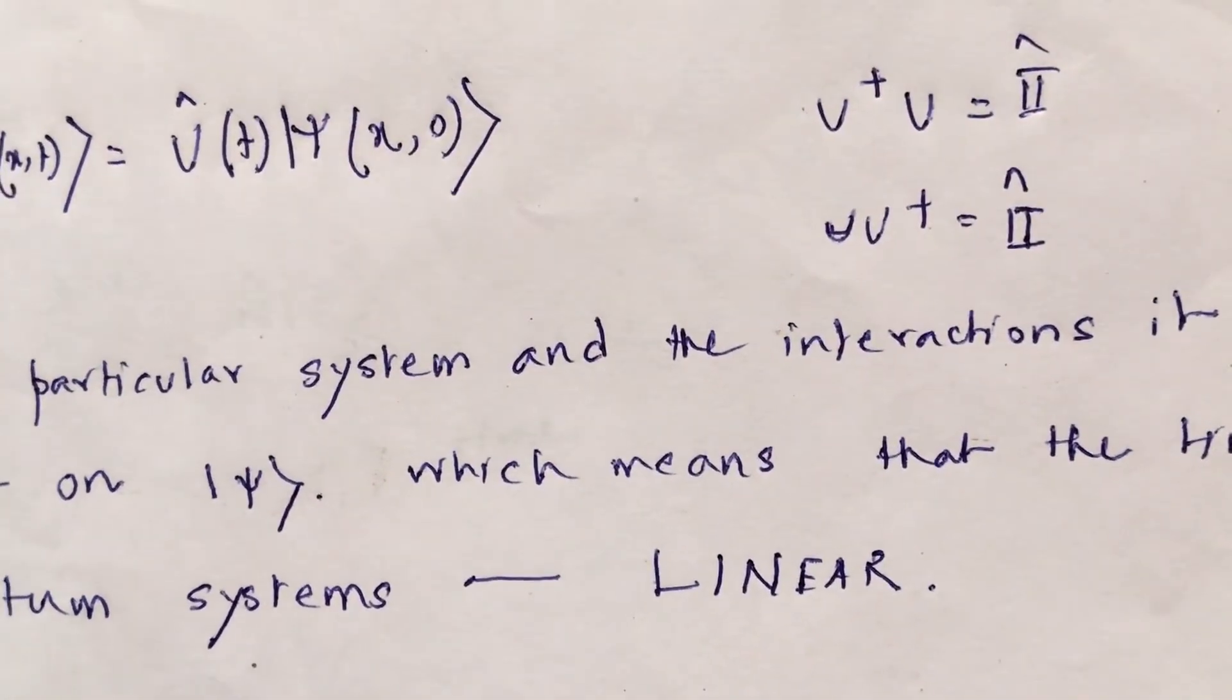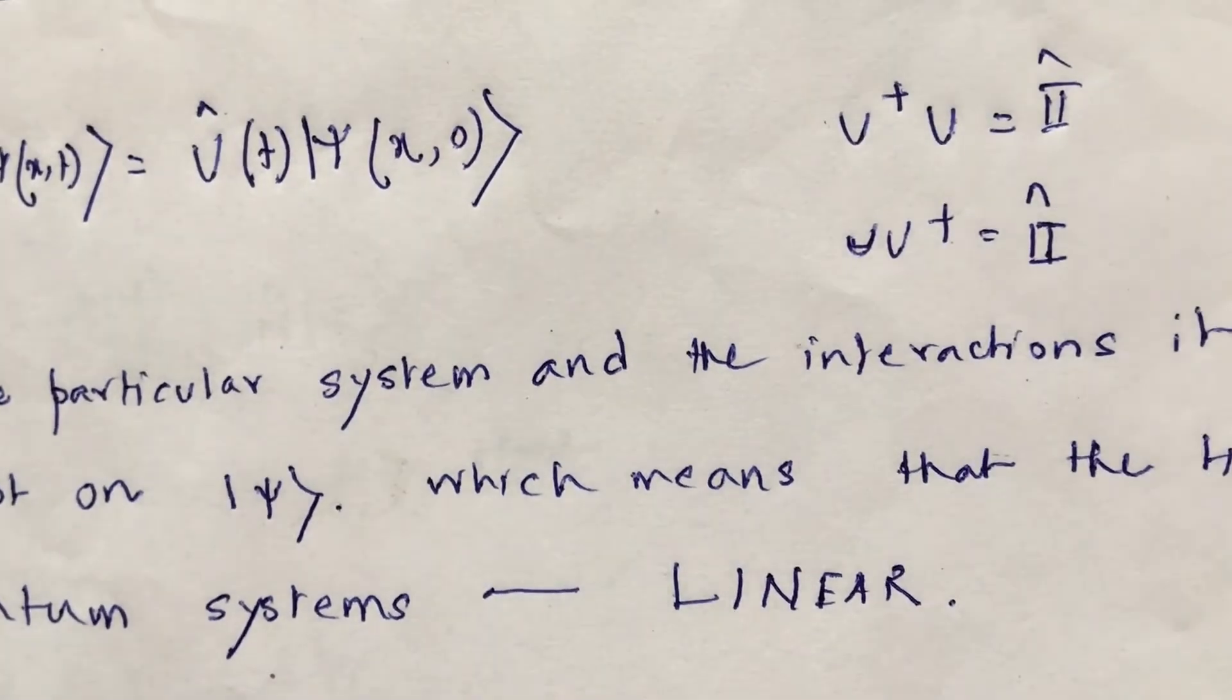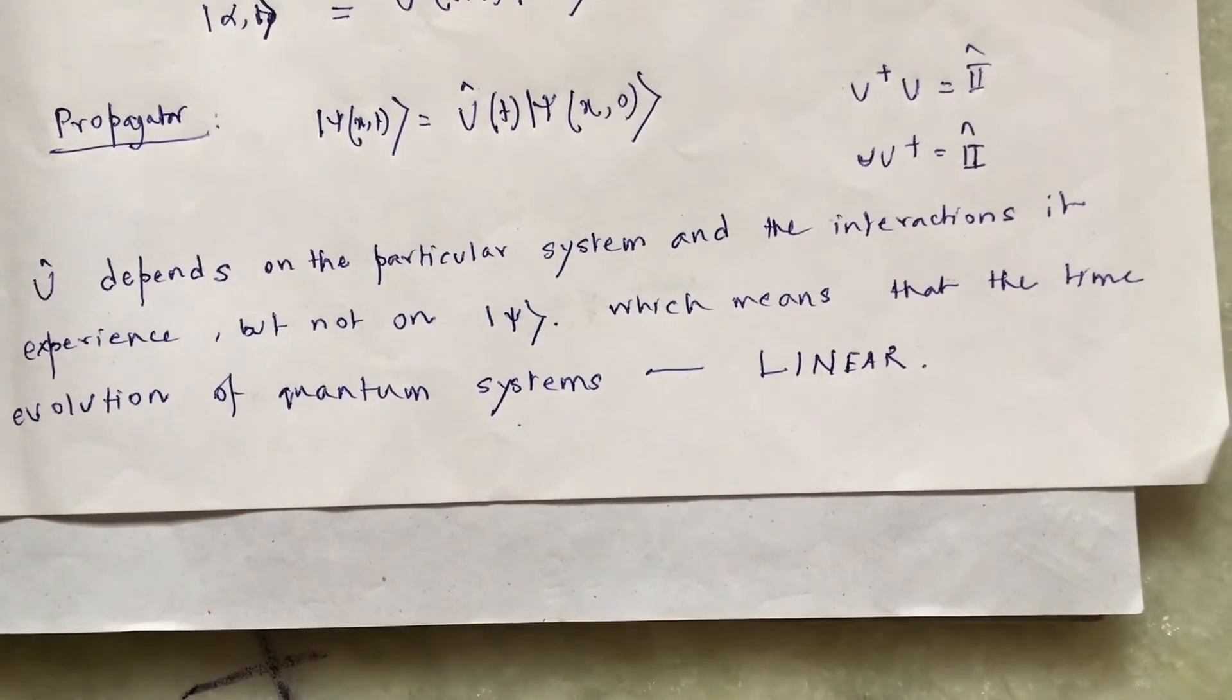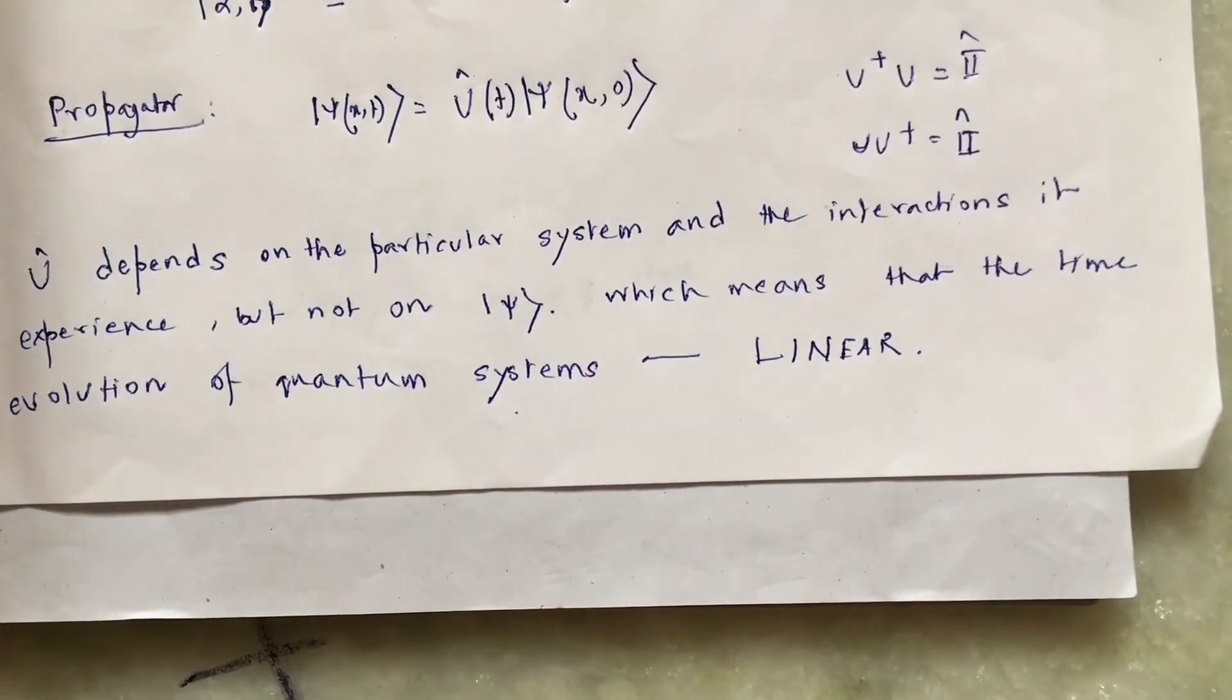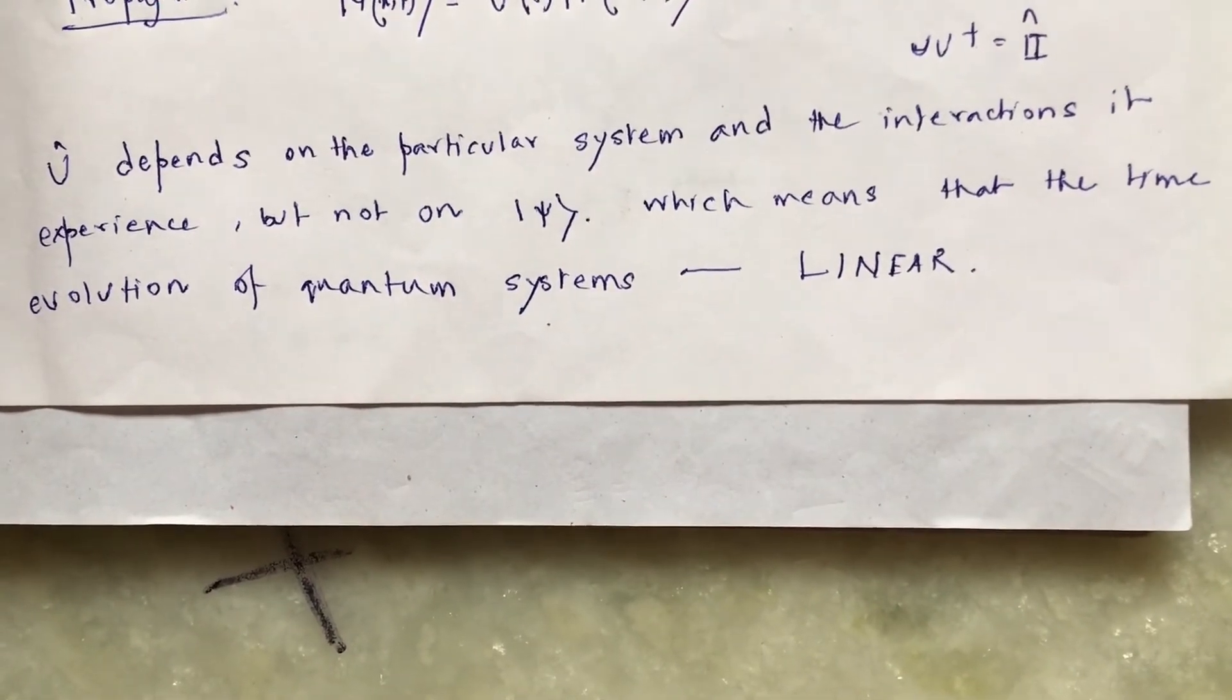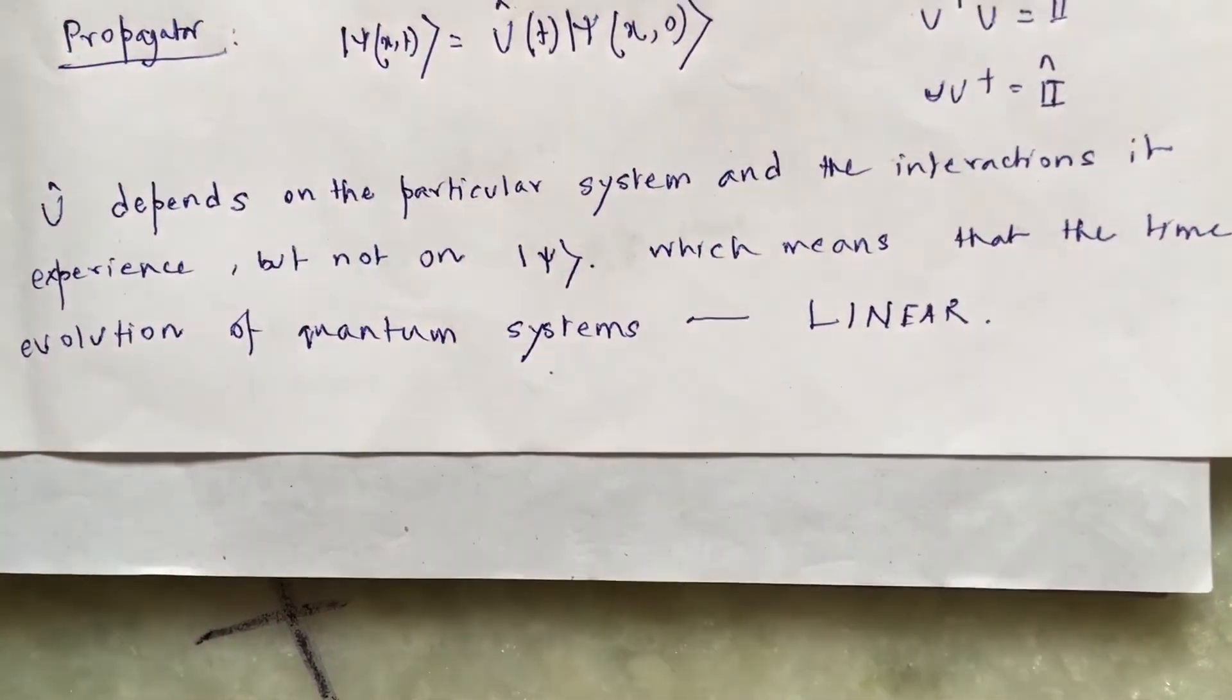u satisfies a particular property. This is a unitary operator. So it satisfies u dagger u equal to identity matrix and of course u, u dagger equal to identity also. This actually means that it maps the Hilbert space into itself. Now, this propagator depends on the particular system on which I am interested and how the system undergoes some interactions. How it behaves when it is doing some interactions. But this u operator does not depend on the state chi.